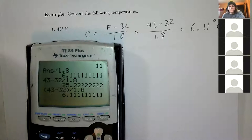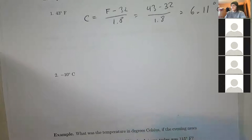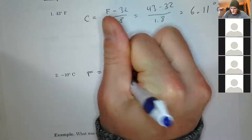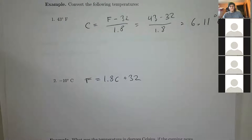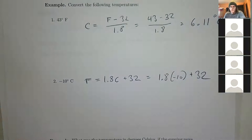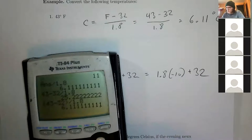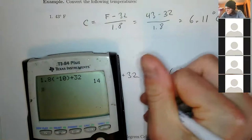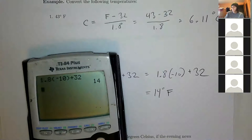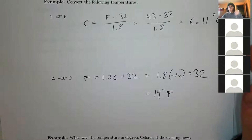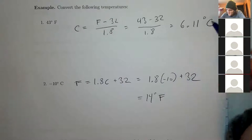Now let's try Celsius to Fahrenheit. The formula is F = 1.8C + 32. Plug in C = −10: F = 1.8 × (−10) + 32. There's no division, so no parentheses concern. 1.8 times −10 is −18, plus 32 equals 14 degrees Fahrenheit.